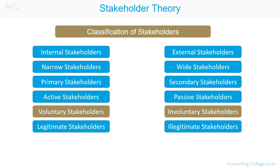Voluntary and involuntary stakeholder classification describes those stakeholders that engage with the organisation voluntarily and those that have no choice but to engage involuntarily. Voluntary stakeholders choose to participate in the activities of the organisation, such as employees, environmental groups, active shareholders and so forth. Involuntary stakeholders do not choose to participate — rather, they are affected by the organisation's activities, for example local communities, the natural environment, future generations, etc.